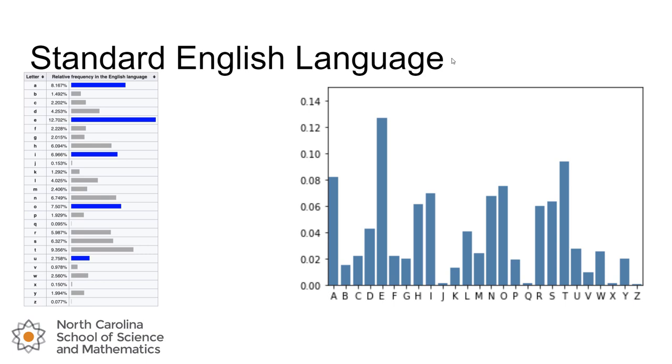We can read that fine print: A is about 8.167% of all letters in the English language. E is the highest at around 12.7%. Z is pretty low at about 0.077%.